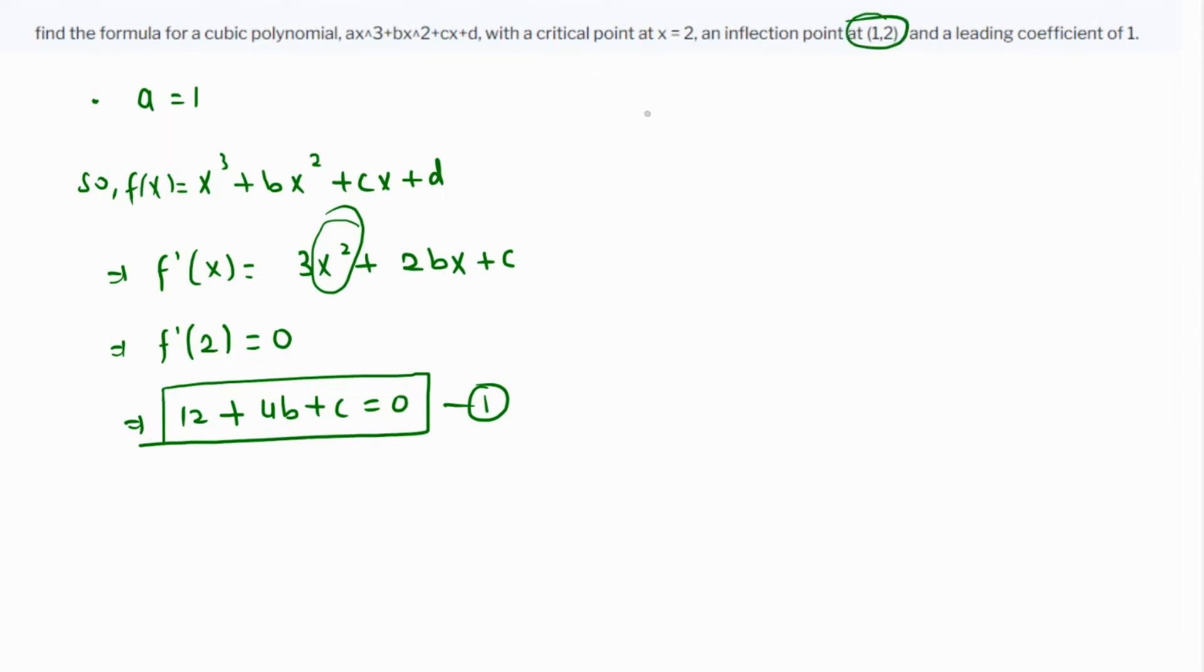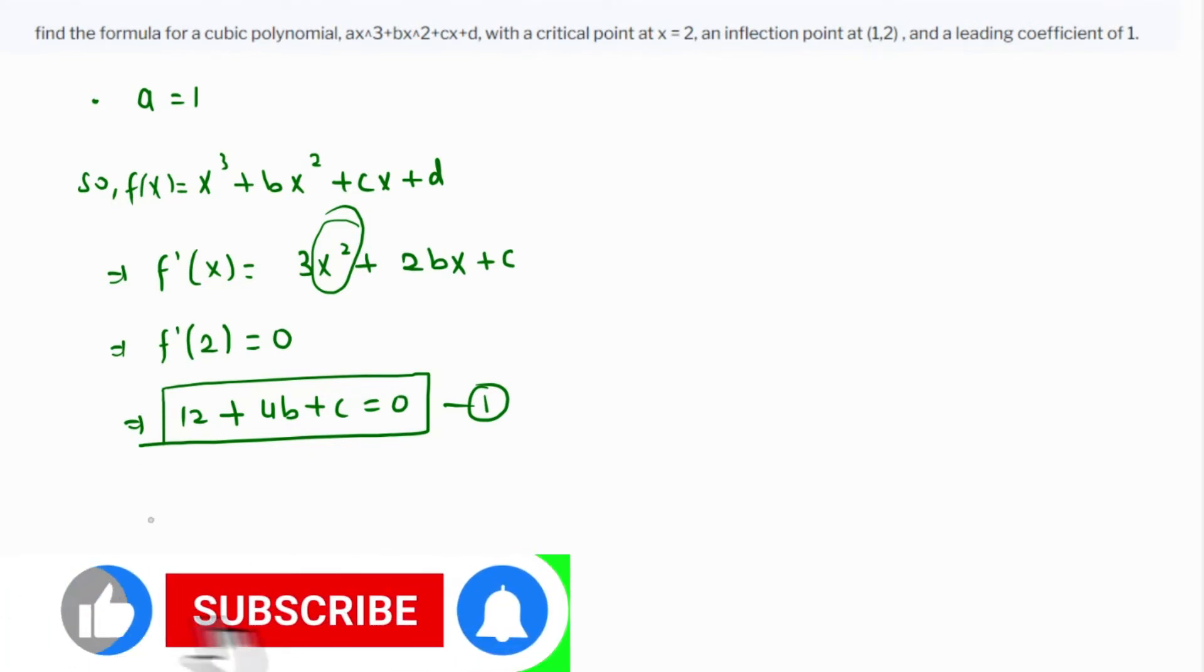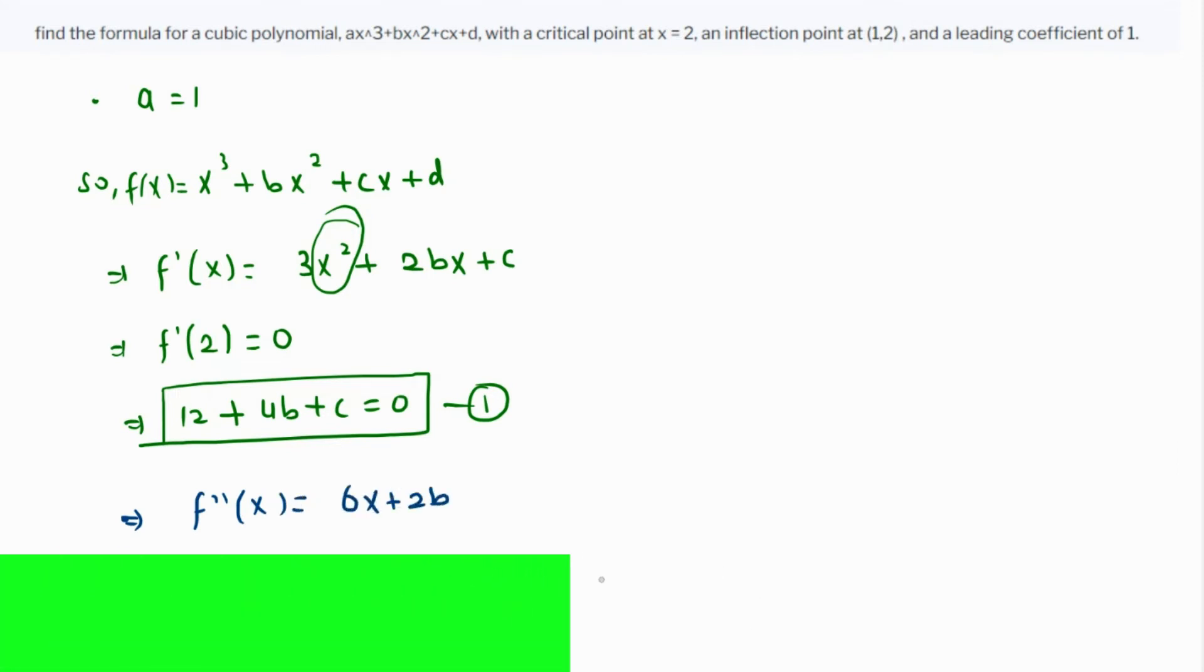We're also given an inflection point at 1, where the double derivative is 0. So f''(x) = 6x + 2b, and f''(1) = 0.